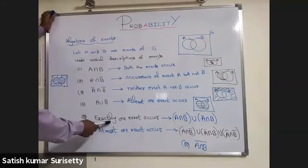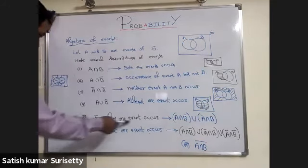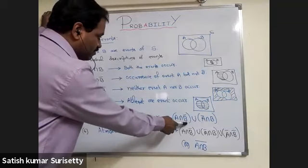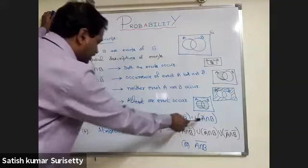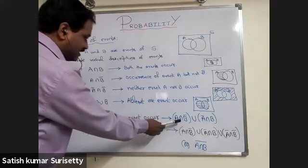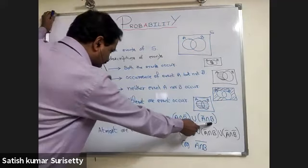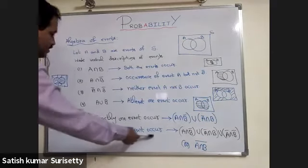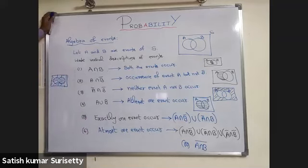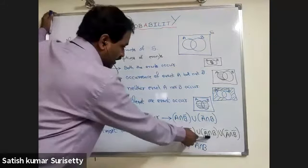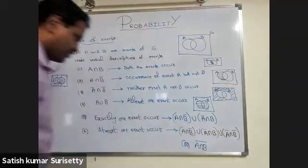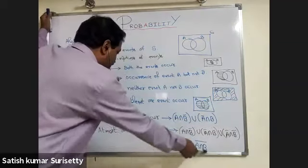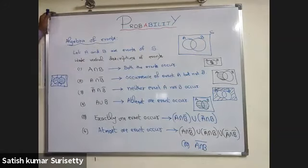When exactly one event occurs, the set notation is (A intersection B bar) union (A bar intersection B) — here exactly event A occurs alone, and here exactly event B occurs alone. For at most one event, meaning either one event or no event occurs, the region includes A alone, B alone, and neither, which in set notation corresponds to (A intersection B) complement, i.e., A intersection B whole bar.